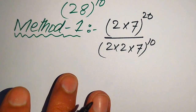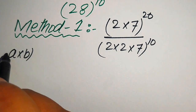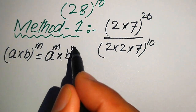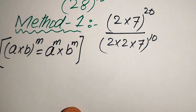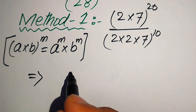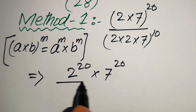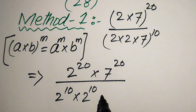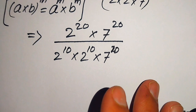Next, we use the exponent law: if you have (a × b) to the power of m, it equals a^m multiplied by b^m. Applying this law, we break the exponents across each factor, giving us 2^20 × 7^20 divided by 2^10 × 2^10 × 7^10.